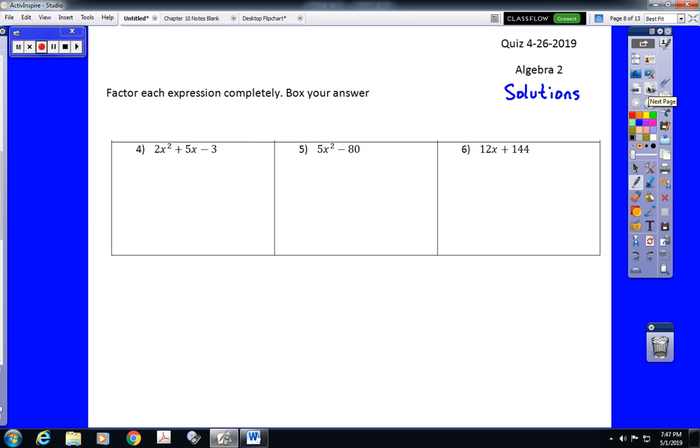This is a not equal to one factoring, which means we need to do two times negative three, which is negative six. We want to look for a pair of numbers that multiplies to negative six and adds to positive five. That would be six and negative one. Now, we don't write that as our answers right away. We split that middle term up. So, we have two x squared, and then the five x gets broken up into a positive six x and a negative one x.